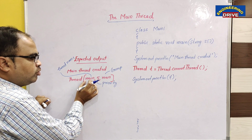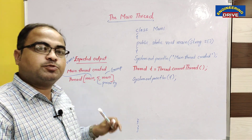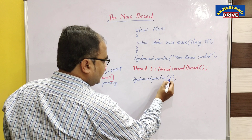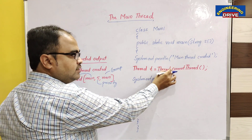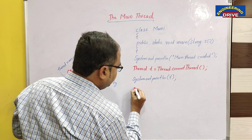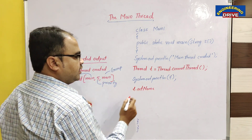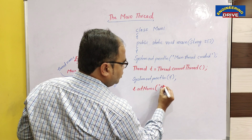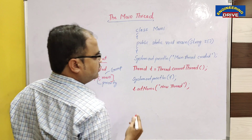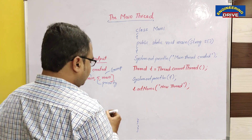We got the information about the main thread. Now you might ask: can we change the name of the main thread? Yes, it is possible by using the setName() method. Using the object t, if you want to make any modification to the current main thread, you use this object. So I call t.setName() and in double quotations give another name, for example 'new thread'. I have changed the name from 'main' to 'new thread' using the setName() method.